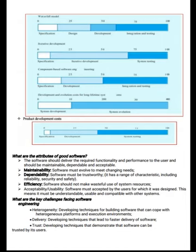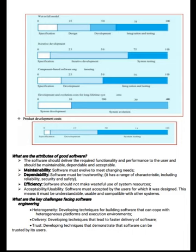What are the attributes of a good software? The software should deliver the required functionality and performance to the user and should be maintainable, dependable, and acceptable. Maintainability: software must evolve to meet changing needs. Dependability: software must be trustworthy, with a range of characteristics including reliability, security, and safety. Efficiency: software should not make wasteful use of system resources. Acceptability or usability: software must be accepted by the users for which it was designed; it must be understandable, usable, and compatible with other systems.